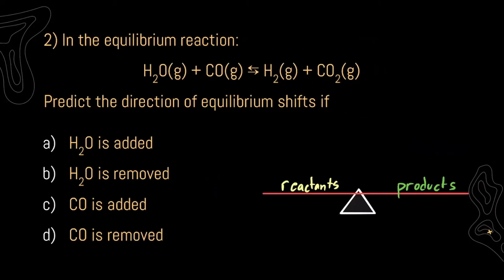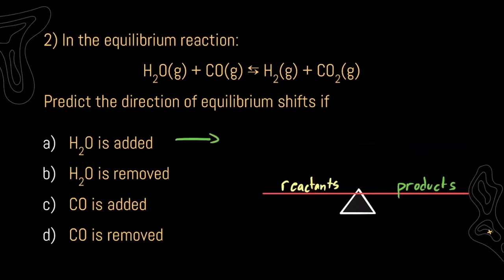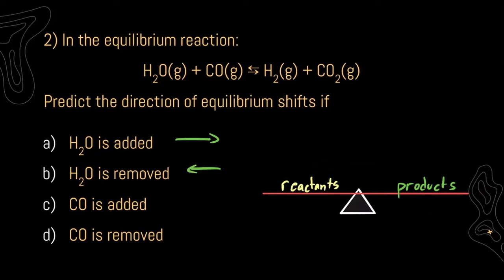For two, we're given the equilibrium reaction between water vapor and carbon monoxide to produce hydrogen gas and carbon dioxide gas. What happens when we add water vapor? We are increasing the number of our reactants, so we're going to send our reaction towards our products, sending our equilibrium to the right. If we remove water, we're going to lower the amount of reactants we have, lowering our reactant side on the seesaw, sending our reaction towards our reactants, shifting our equilibrium to the left.